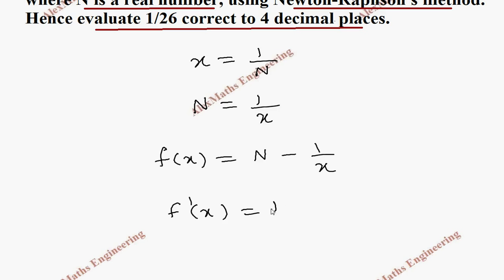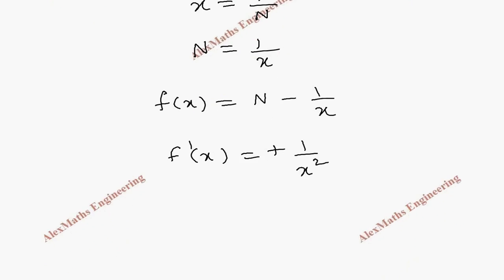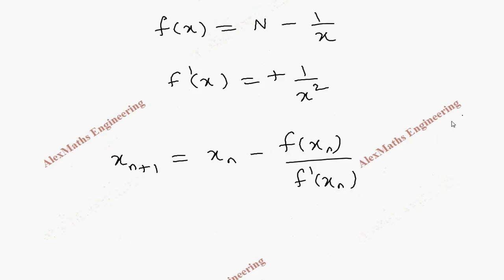Now by Newton-Raphson's formula, x_n+1 is x_n minus f of x_n by f dash of x_n. And from this we take x_n as it is.